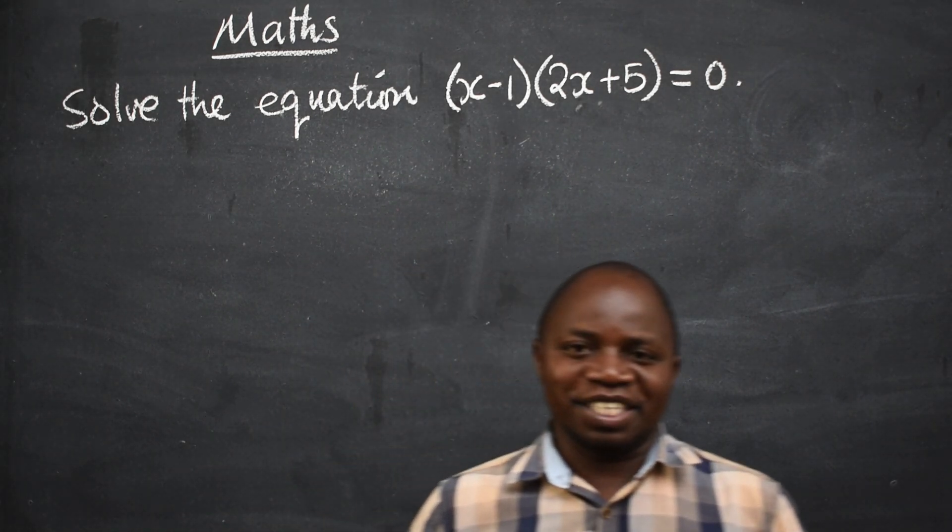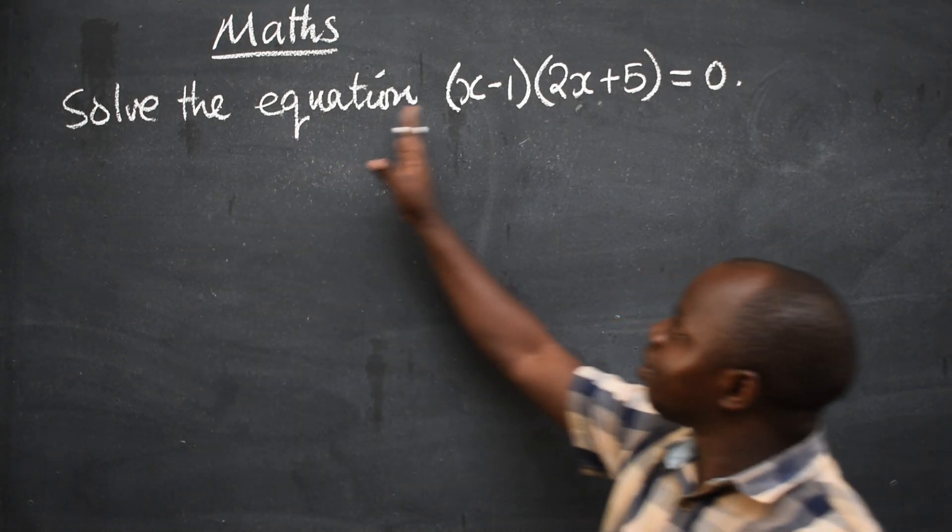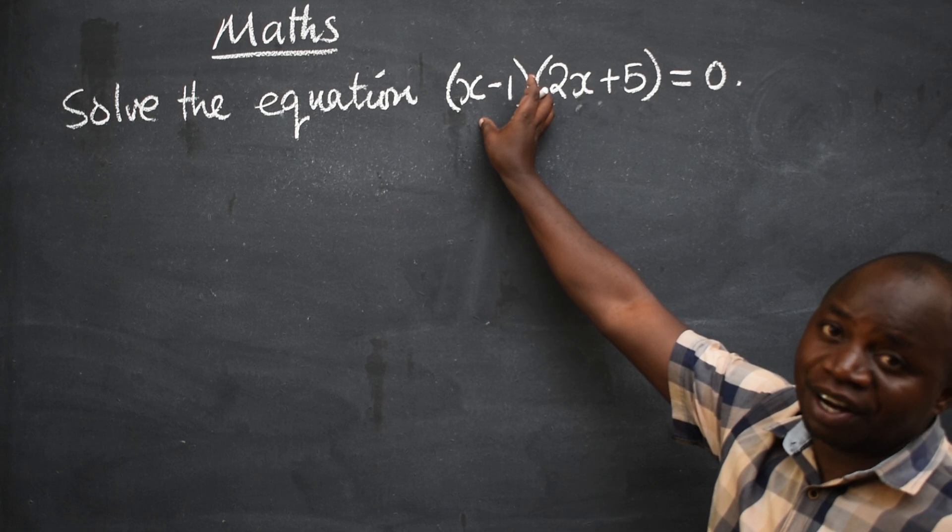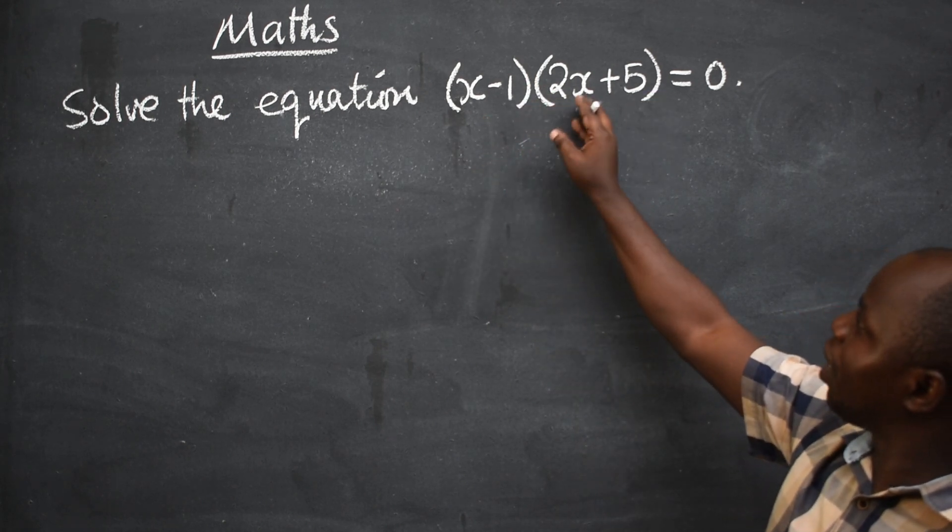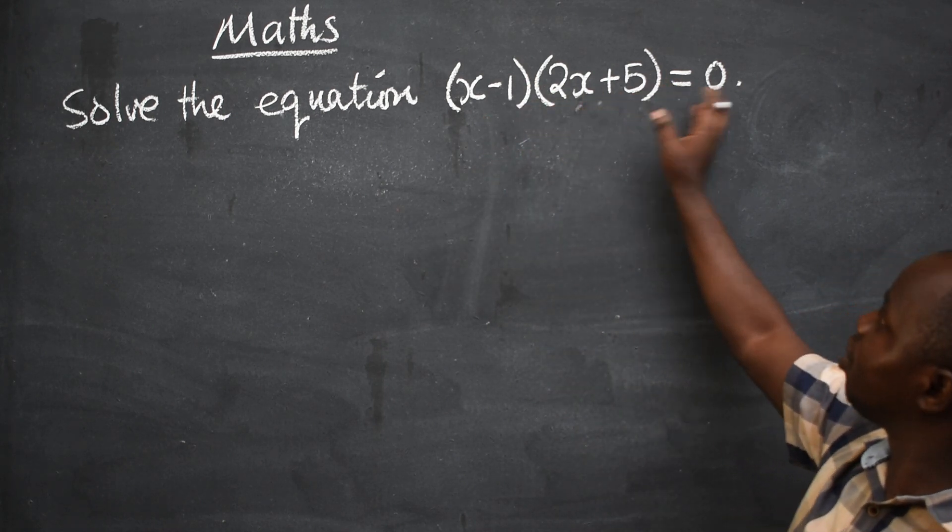Hello friends, it's mathematics. Let's solve the equation x minus 1 in brackets, another one, 2x plus 5 in brackets, is equal to 0.